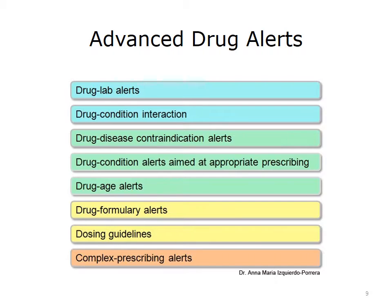There are eight identified types of advanced drug alerts. Drug lab alerts are generated when drug administration requires close monitoring of laboratory results before and/or after administration of the drug. Drug condition interactions are generated to raise awareness of specific prescribing for particular clinical conditions. Drug disease contraindication alerts are generated to warn against prescribing a certain drug in a specific disease or condition. Drug condition alerts, aimed at appropriate prescribing, are generated to encourage prescribing a certain drug in a specific clinical condition.